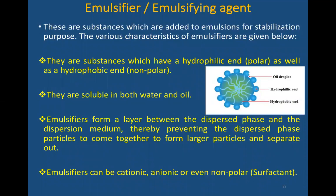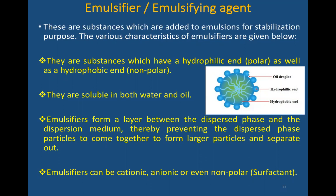Now, talking about emulsion: when you have oil and water and need to form emulsion easily, we usually use an emulsifying agent. These are substances which are added to the emulsion for stabilization purposes — once you get the emulsion, adding the emulsifying agent will also help to stabilize it. The characterization of an emulsifier: they are substances which have a hydrophilic as well as hydrophobic part.